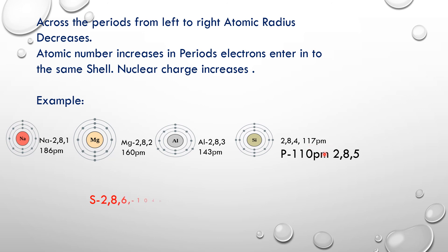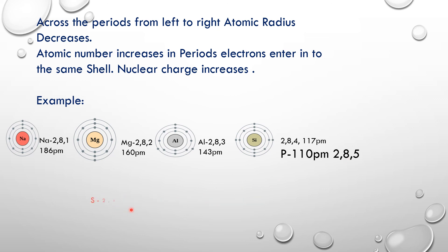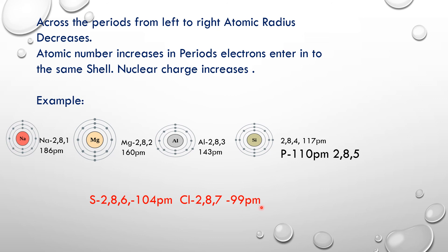Phosphorus (atomic number 15): the new electron enters the M shell again, and its atomic radius further decreases. Sulfur's new coming electron also enters the M shell only — no new shell is added. Chlorine's last differentiating electron enters the M shell, giving an atomic radius of 99 picometers. Argon is an inert gas with a fully filled valence shell — eight electrons in the outermost orbit.